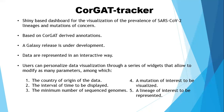CorgatTracker is a Shiny-based dashboard that allows the visualization of the prevalence of SARS-CoV-2 lineages and mutations of concern, as annotated by Corgat. The Galaxy release of this tool is currently under development. In CorgatTracker, data are represented in an interactive way, and the user can personalize several visualization parameters by means of a set of widgets.